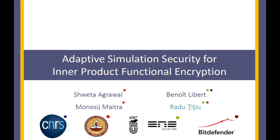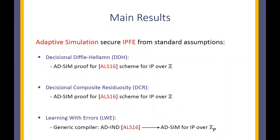Hello everyone, my name is Radu and today I'm going to talk about adaptive simulation secure inner product functional encryption schemes, which is joint work with Shweta, Benoit, and Monoshij. Our work shows that it's possible to have adaptive simulation secure inner product functional encryption schemes from standard assumptions like Decisional Diffie-Hellman, Decisional Composite Residuosity, or Learning with Errors.